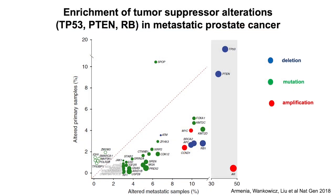To set the stage for the plasticity concept, this is a plot from a large consortium that Arul Chinnaiyan and I led some years ago to sequence metastatic prostate cancer at scale — sort of to go with the TCGA, which was all primary prostate cancer. There's a ton of information here, but the key point is that 50 percent of metastatic prostate cancers have one, or often all three, of these alterations.